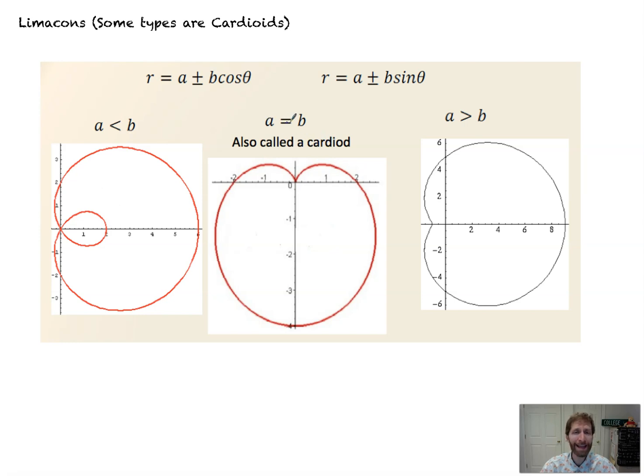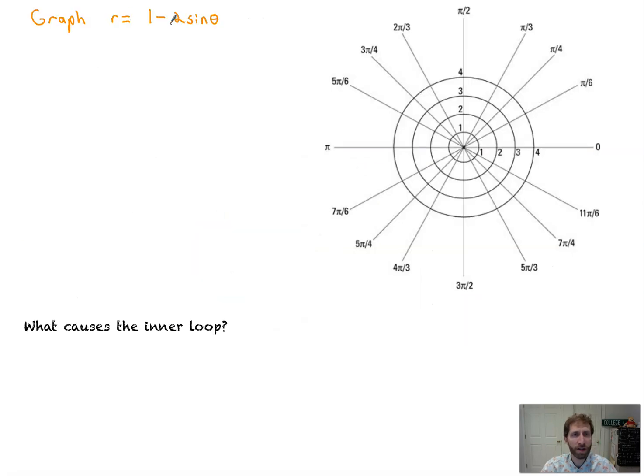When a is less than b, we end up with an inner loop. We'll talk about why that is in a little while. You've got cardioids, that's when a is equal to b. We'll talk about why that happens. And then you've got a dimpled limacon. That's where we don't have quite a sharp inset, it's kind of like a no-budded limacon if you will, or a hatchback if you're into cars instead of a trunked car. That's where a is greater than b. We'll talk about why those relationships cause the graphs to look like that as we graph them.